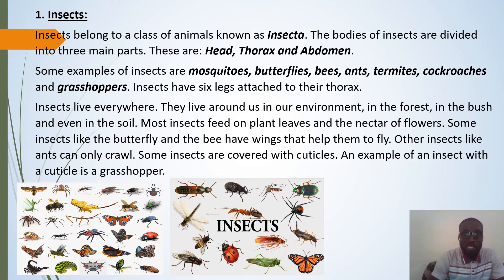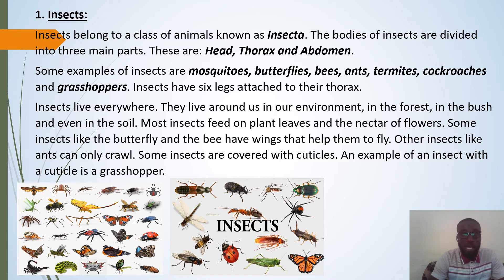Some insects like the butterfly and the bee have wings which enable them to fly. Other insects like ants can only crawl because they have no wings. Some insects are covered with cuticles — an example of an insect with a cuticle is the grasshopper.